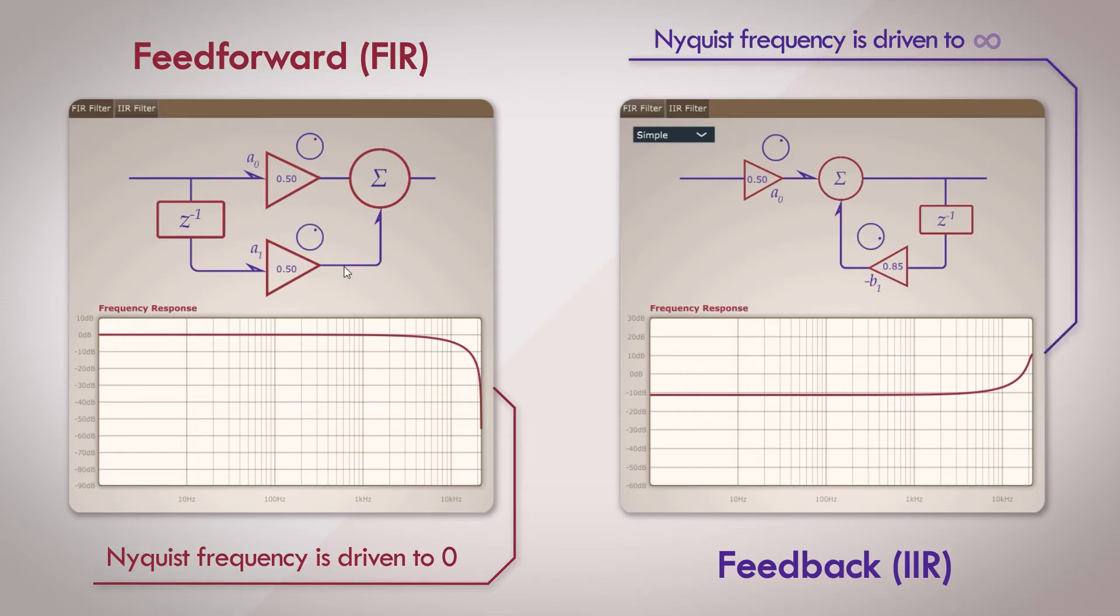In the case of the feedback filter, the Nyquist frequency is boosted up, and as the b1 coefficient tends towards 1, the Nyquist frequency is driven towards infinity. Now the particular frequency isn't really of interest here, but what the filters can do. The feedforward filter has the ability to drive a signal to zero but can never drive a signal towards infinity. The feedback filter, on the other hand, has the ability to drive a signal towards infinity but can never drive a signal down to zero.